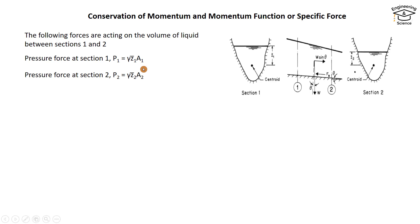Where z̄ is the depth of centroid of flow area A. The component of the weight of liquid between sections 1 and 2 equals W sin θ.